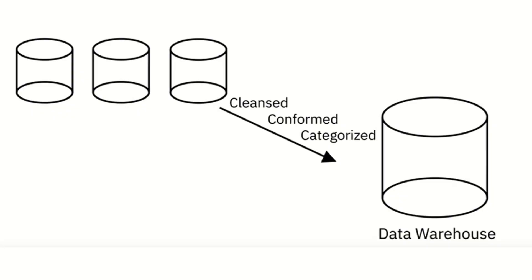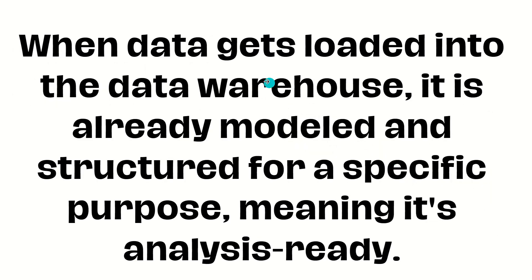As shown in the diagram, data comes from different sources into the data warehouse, where it has already been cleaned, conformed, and categorized. Cleansed means the data is free of all problems, issues, and anomalies. Conformed means the data already conforms to certain data standards and guidelines. Categorized means the data has already been categorized based on certain parameters.